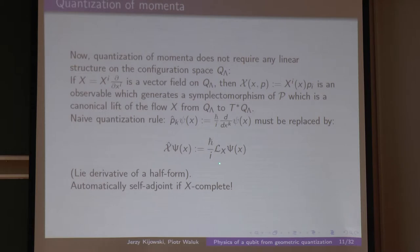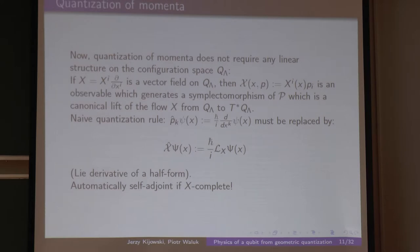If the field is complete, the proof that this operator is self-adjoint consists in showing the one-parameter group e to the power it H: it is just a flow acting on psi. If you have a complete vector field, you have a global flow on Q, and you simply allow psi to flow over it. If X is not complete, it is not globally defined, so either you lose part of the wave function or you acquire something from nothing.